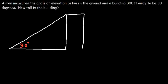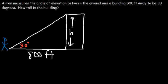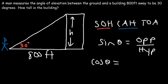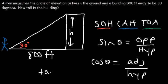The building is 800 feet away, and the man is somewhere over here, so this is 800 feet. Our goal is to solve for the height of the building. You need to be familiar with SOHCAHTOA. Sin theta equals opposite over hypotenuse. Cosine theta equals adjacent over hypotenuse. Tangent theta equals opposite over adjacent.